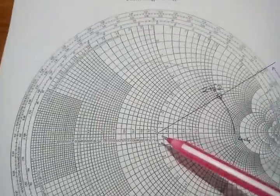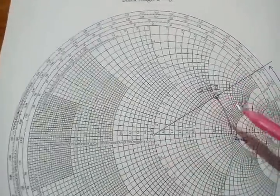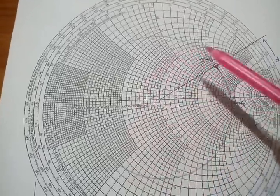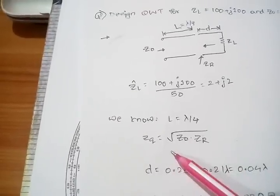Then take a compass, place one point here and second point on the normalized value and draw a VSWR circle. Once you do that, now we need to find out the input impedance for the quarter wave transformer.